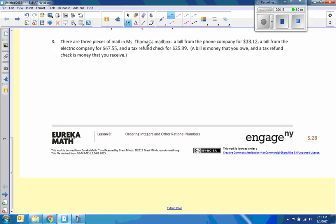Number 3. There are three pieces of mail in Ms. Thomas' mailbox. A bill from the phone company for $38.12. Well, if you get a bill for $38.12, you owe it. So that's a negative $38.12. A bill from the electric company, negative $67.55. So the first thing we're doing is listing. And a tax refund, getting money back, is positive $25.89. And it says here, a bill is money that you owe, and a tax refund check is money that you receive. So receiving is positive, owing is negative.